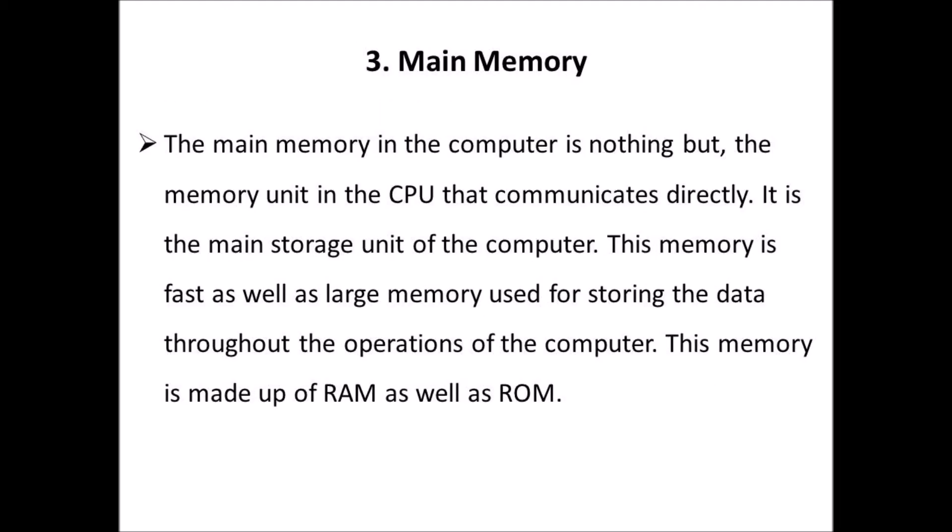Third one: main memory. The main memory in the computer is the memory unit that communicates directly with the CPU. It is the main storage unit of the computer. This memory is fast as well as large, used for storing data throughout the operations of the computer. This memory is made up of RAM as well as ROM.